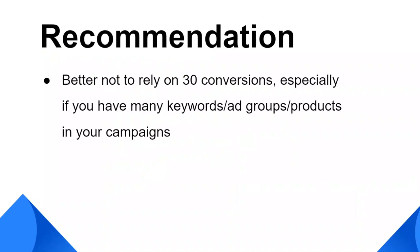Despite Google's guideline of minimum 15 conversions in the past 30 days, whether at campaign level or conversion action level, I personally do not find that number of conversions enough to use target ROAS bidding strategy in my search campaigns. Based on my experience, more data improves the performance of target ROAS. I usually aim for at least 50 conversions in the past 30 days for my search campaigns before switching to target ROAS; otherwise, I would prefer using target CPA bidding strategy. Of course, each campaign situation is different, and it always takes testing and experimentation to decide which bidding strategy you are more comfortable with.